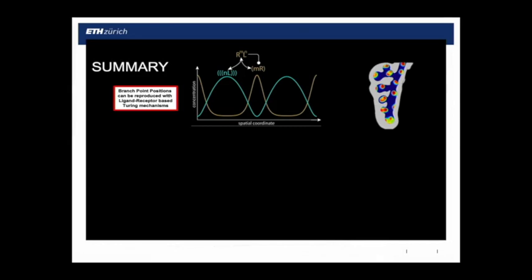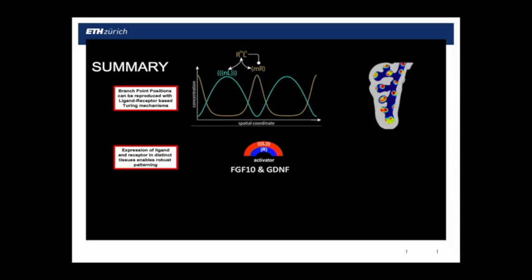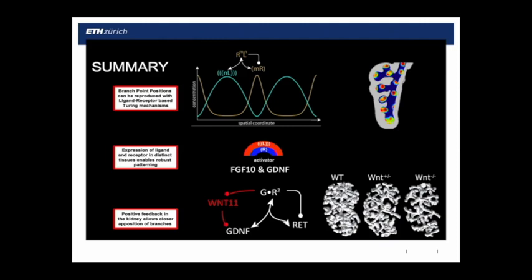The summary for this part is that we propose a ligand receptor-based Turing mechanism defines the points of outgrowth, separating the ligand and receptor into different tissues. Without that separation, the Turing mechanism predicts that for the same parameter set you get different branching patterns — and that's just the property of Turing mechanisms. When bulges do that, they get a litter with very different branching patterns. Finally, positive feedback can modulate the exact branching architecture of that network.